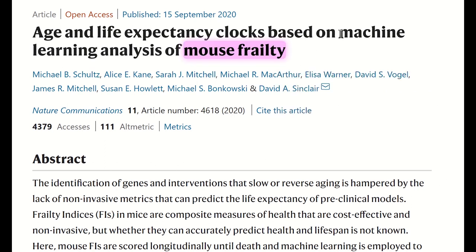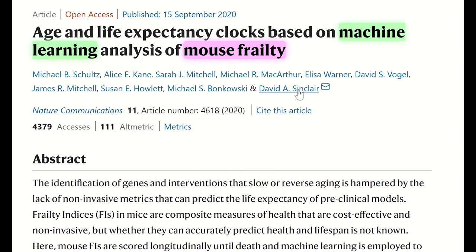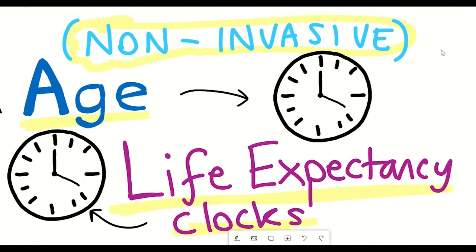And so given by the title, they're using mouse frailty measures in combination with machine learning approaches to come up with two different clocks, one that can determine a mouse's biological age and a second clock that can predict how long the mice has left to live.